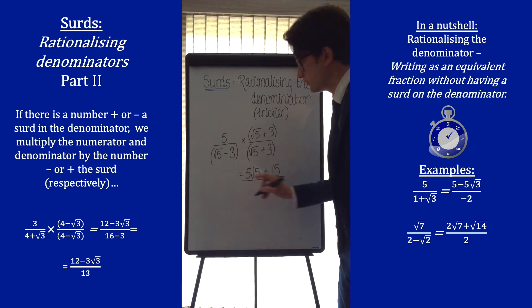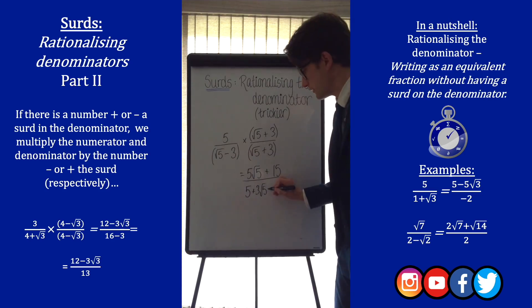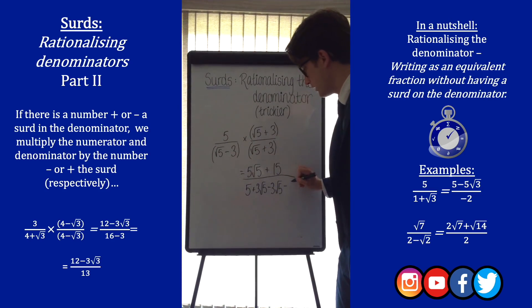So 5 times root 5, 5 times 3, all over root 5 times root 5 is 5. Root 5 times 3 is plus 3 root 5. Minus 3 times root 5 is minus 3 root 5. And minus 3 times 3 is minus 9.